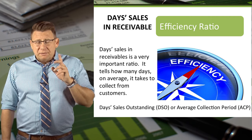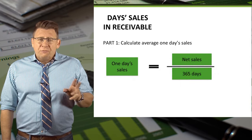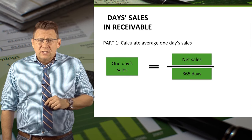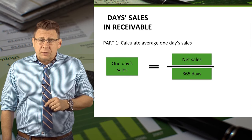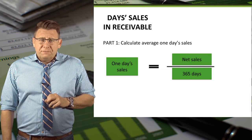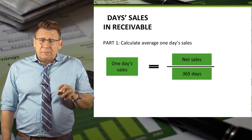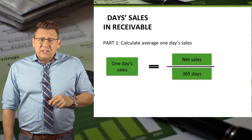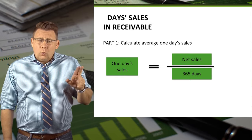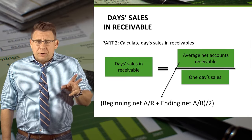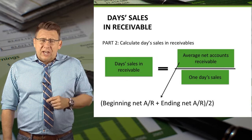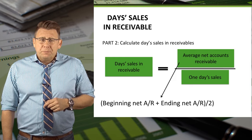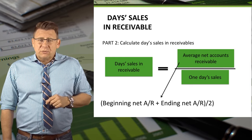Days sales in receivable is a measure of efficiency. The formula to calculate days sales in receivable has two parts. Often students stop after the first part — please don't do that. The first part is net sales revenue divided by 365 days if you are calculating this using annual data. This gives us the average one day's sale. The second part is taking the average net accounts receivable and dividing it by the average one day sales calculated in part one. This gives us the days sales in receivable.